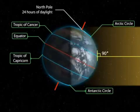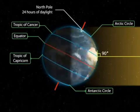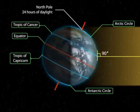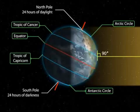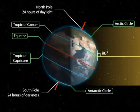Besides, there are 24 hours of daylight at the Arctic Circle, and 24 hours of darkness at the Antarctic Circle.